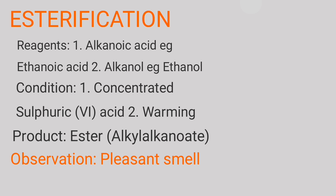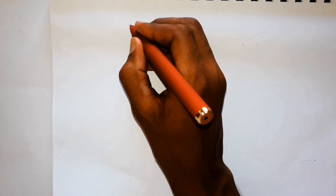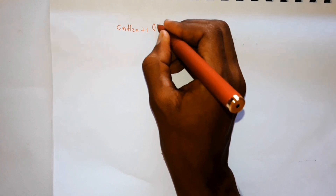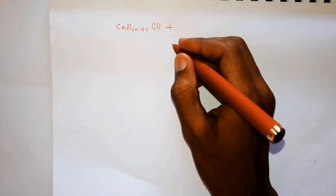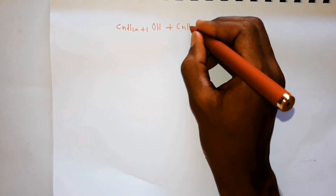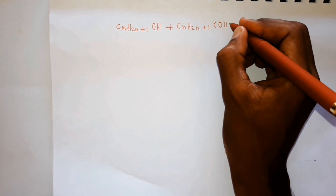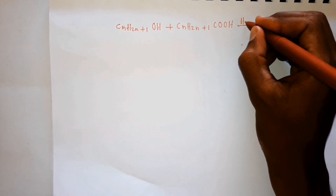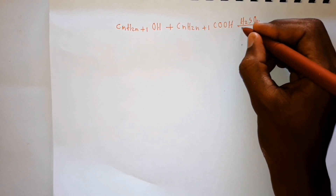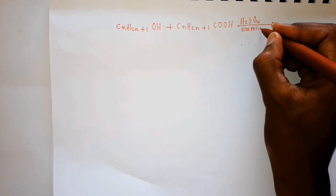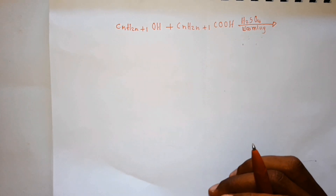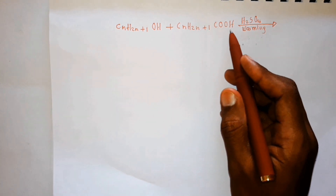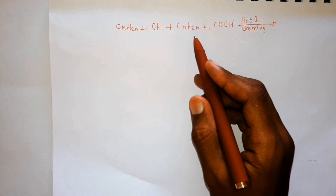So how does this reaction occur? An alkanol, whose general formula is CnH2n+1OH, reacts with an alkanoic acid, that is CnH2n+1COOH. The conditions required are concentrated sulfuric acid acting as a catalyst, and warming. These lead to the formation of an alkyl alkanoate. When writing the symbol for the ester, you begin with the alkanoic part.